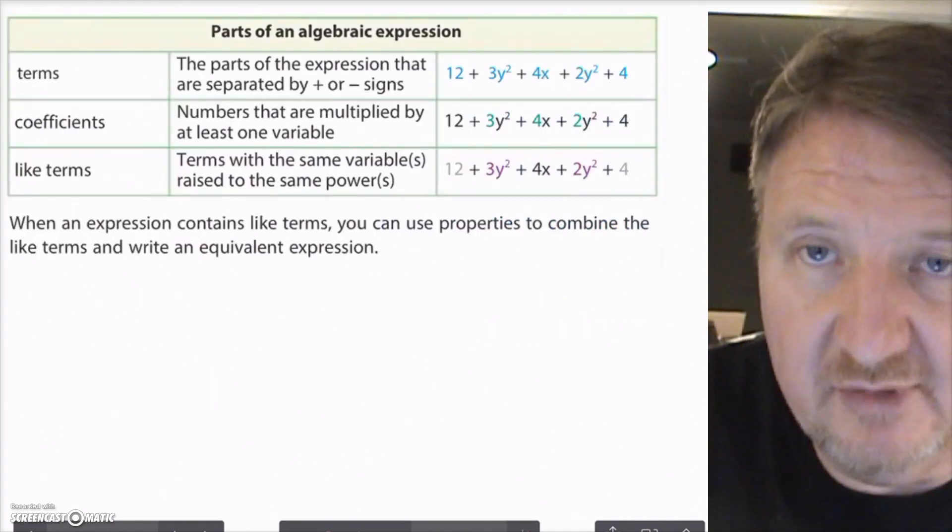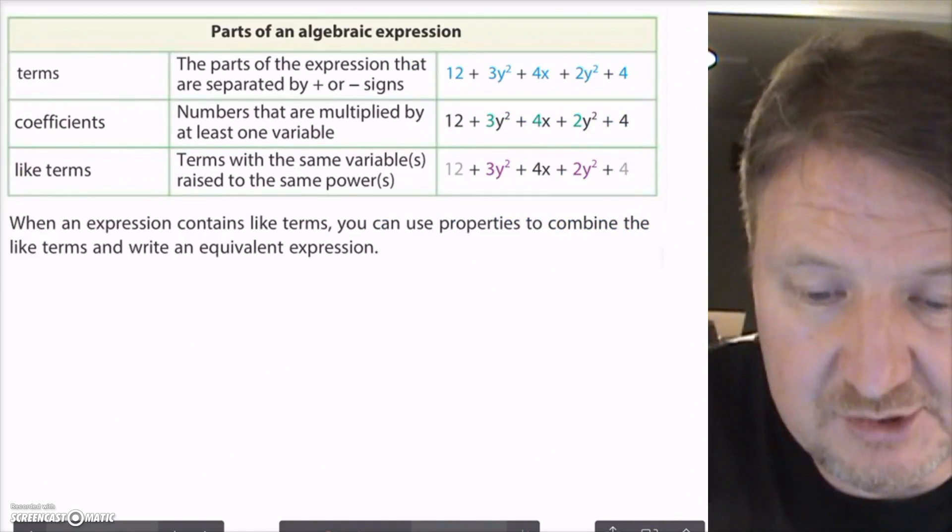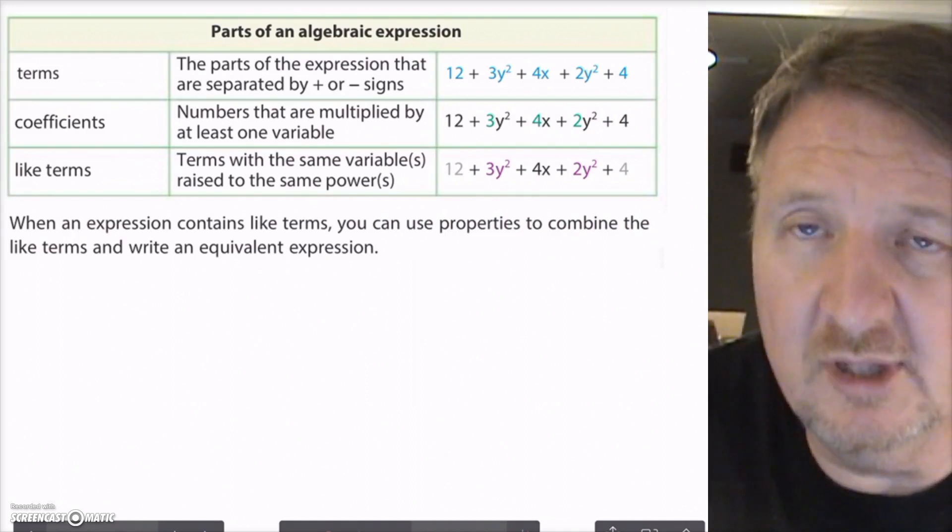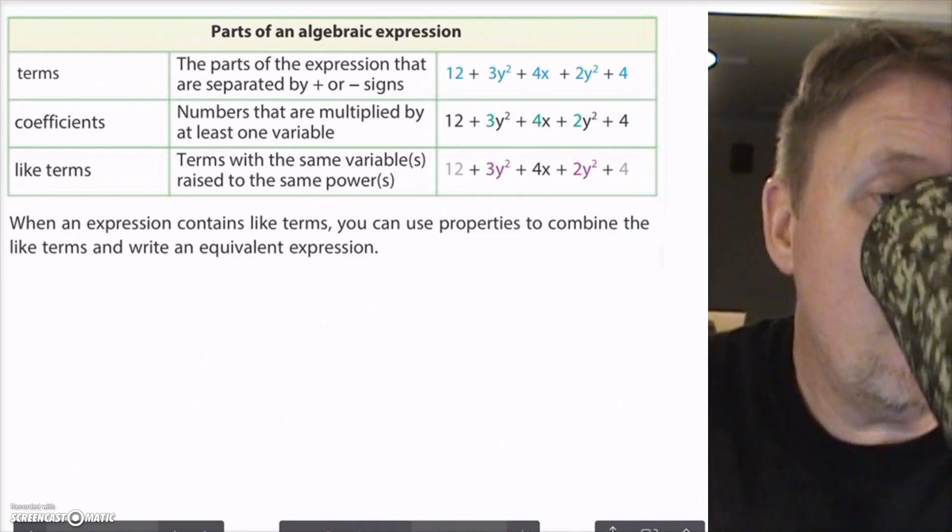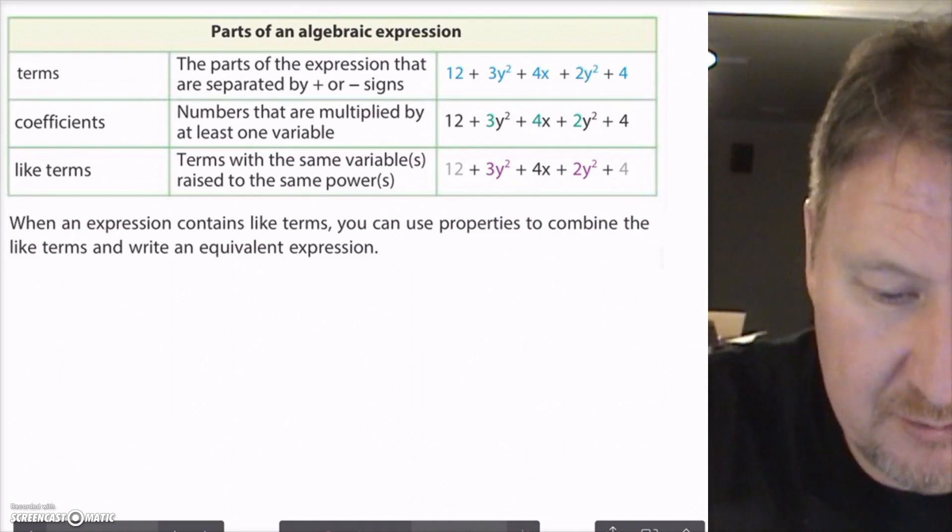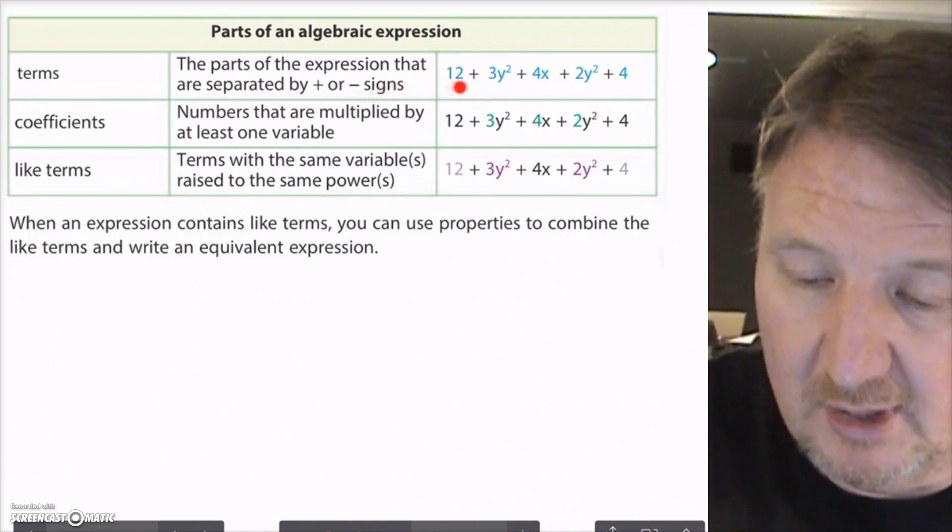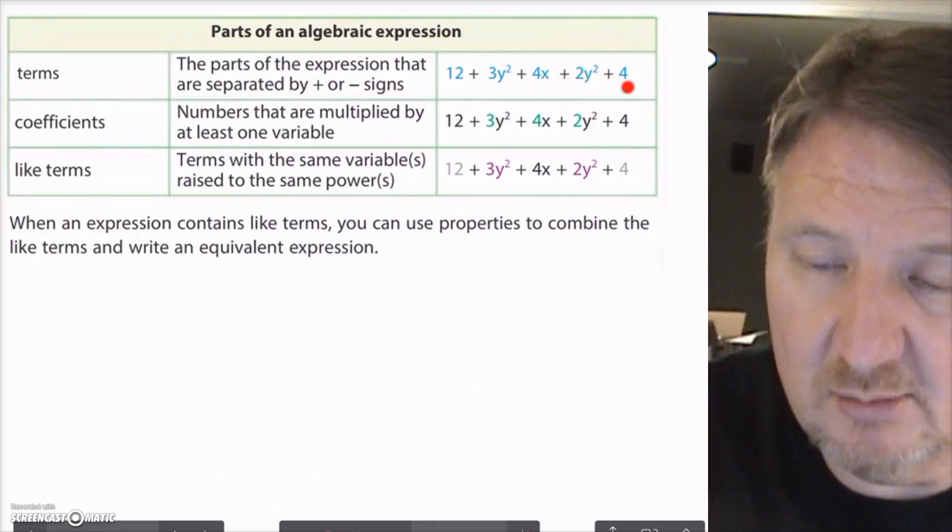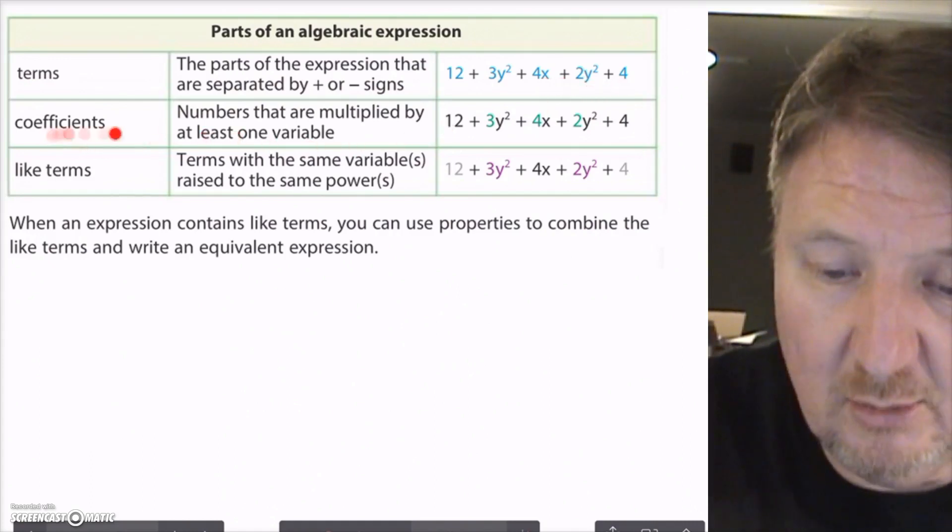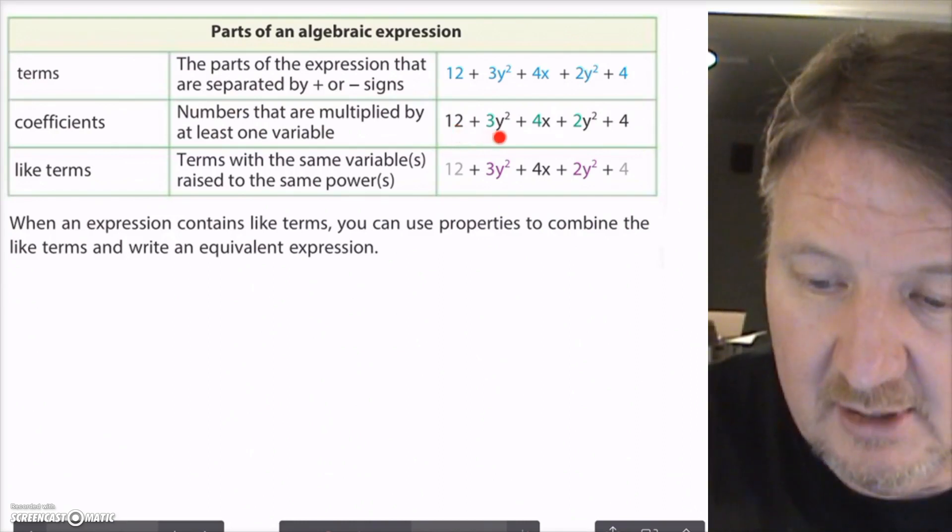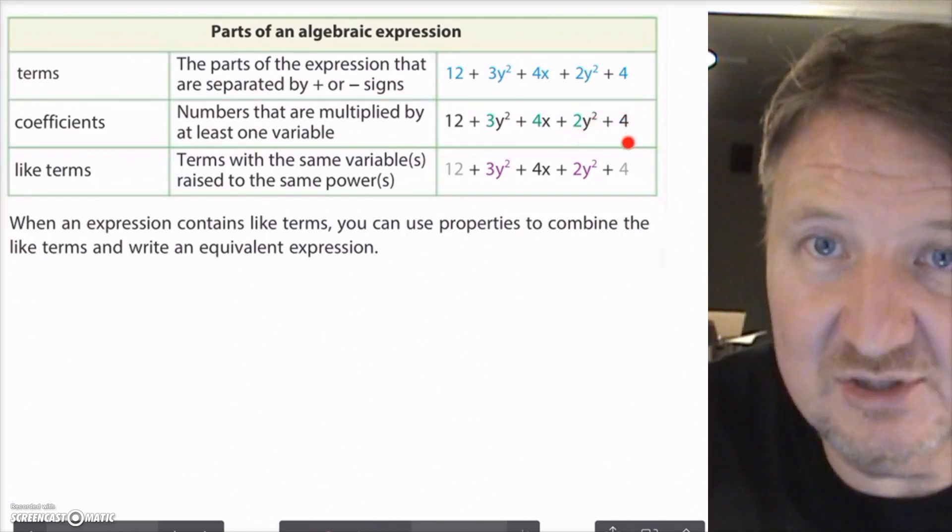Next thing I want to talk about is parts of an algebraic expression because this is kind of important too, because we're going to start talking a lot about terms, coefficients, like terms. And that's going to really move into what you're going to do in the 7th and 8th grade and beyond. So the terms are the parts of the expressions that are separated by addition or subtraction signs. So 12 plus 3y squared plus 4x plus 2y squared plus 4. 12 is a term, 3y squared is a term, 4x is a term, 2y squared is a term, and 4 is a term. Coefficients are the numbers that are multiplied by at least one variable. So 12 would not fit that description. 12 is a constant. But 3y squared, 3 is a coefficient. 4x, 4 is a coefficient. And then 2y squared, 2 is a coefficient. But 4 down here on the end is not. It's just a constant.